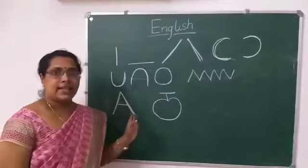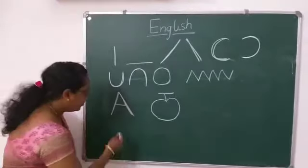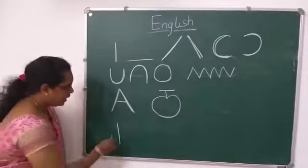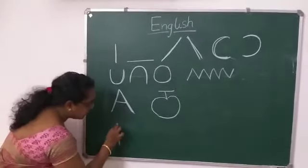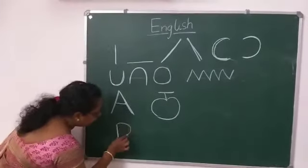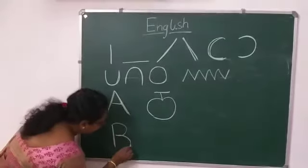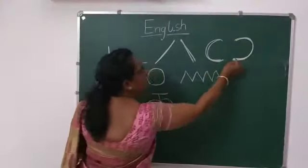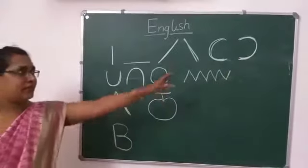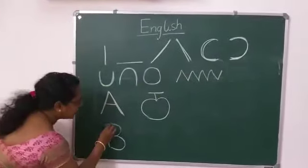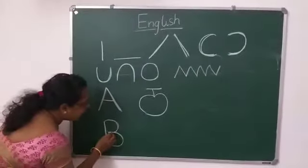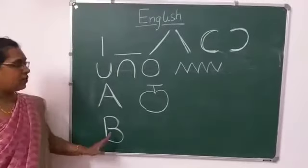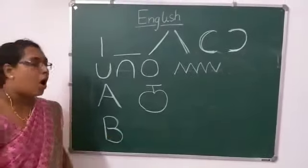Okay, now next letter B. B — how to write? Standing line. Can you see here? Standing line. Half around. Can you see here? Half around. Left up circle — so half circle and half circle. Standing line, half circle, half circle.